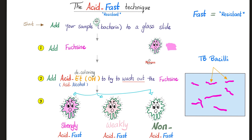Now let's turn our attention to the acid-fast technique. "Fast" means resistant — resistant to the decoloring method. Bring the sample that has the bacteria; add fuchsin, which is a pink color, first. Then add acid alcohol to try to decolorize or wash out the stain. If the bacterial pink color is successfully washed out, this is non-acid-fast. If it's partially washed out, this is weakly acid-fast. If the bacteria did not change whatsoever — truly resistant to the acid alcohol — this is acid-fast. Just like tuberculosis.